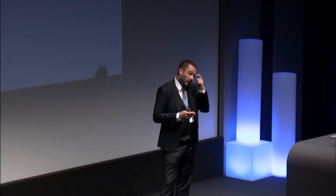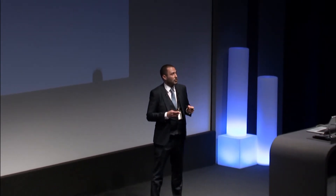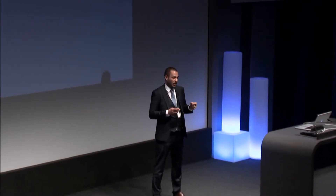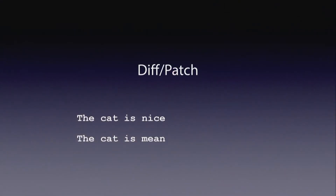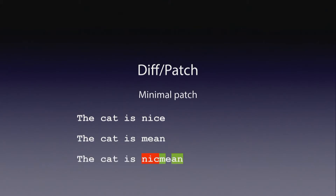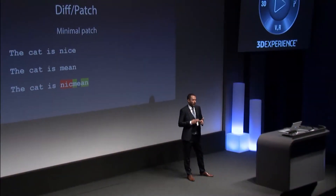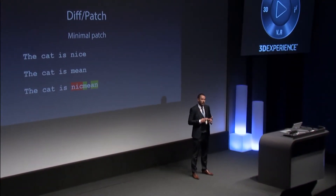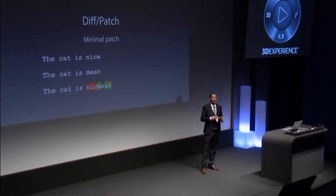Let's consider that the user is starting with this sentence: 'The cat is nice' — or 'My cat is very nice' — and then wants to change it to 'The cat is mean.' We can use the diff we typically have in our tools, which usually tries to make a minimal patch. So here, what is it going to do? It's going to remove 'NIC' because it detected those three letters are no longer there, then keep the 'E', and then add 'AMN'.